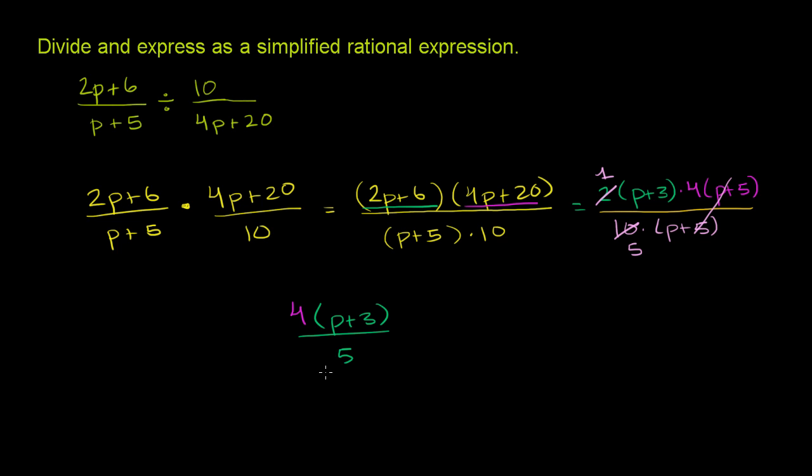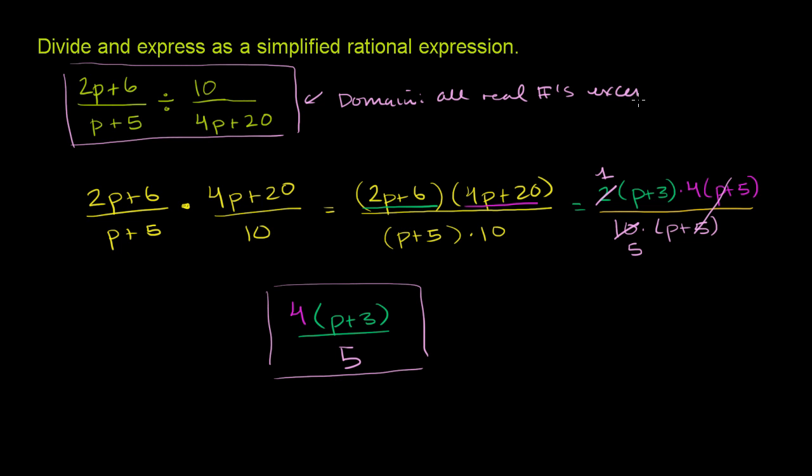And I've said this in previous videos. But if you truly want this expression right over here to be 100% equivalent to this expression right over here, you do have to make the assumption that p is not defined at negative 5. Because if you look at either of these expressions, they are not defined when p is equal to negative 5. So over here, you have to put the constraint that the domain is all real numbers, all real numbers, except p is equal to negative 5.